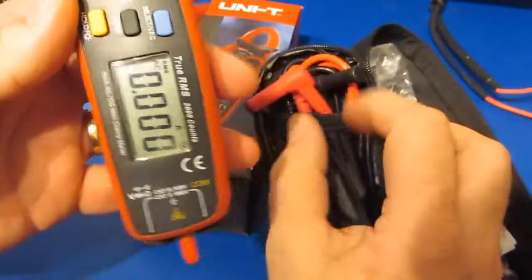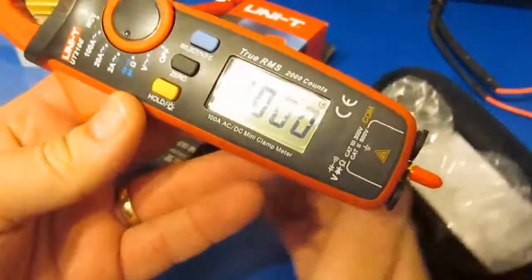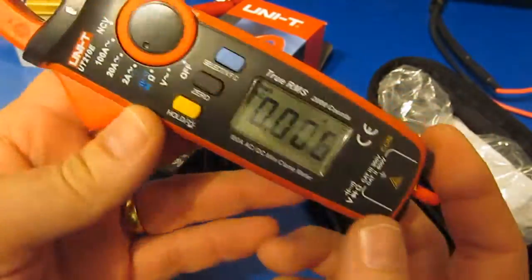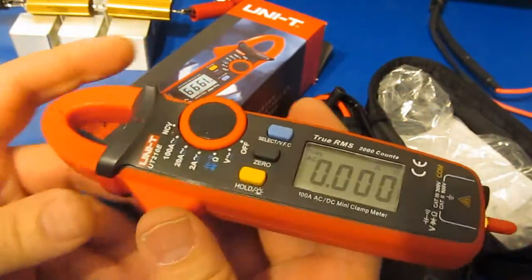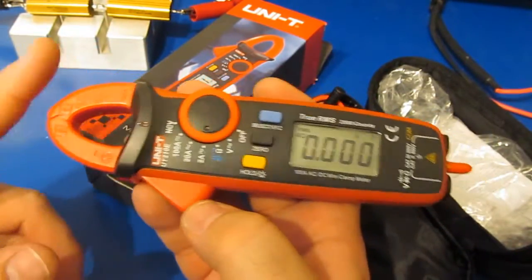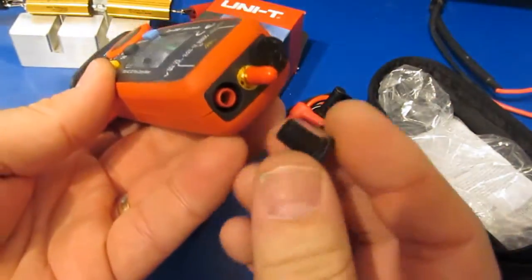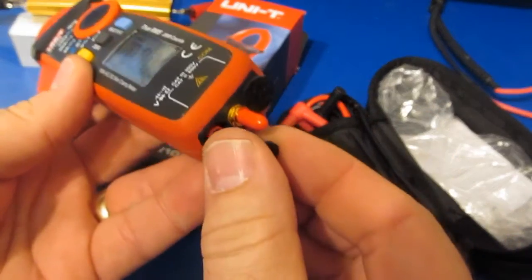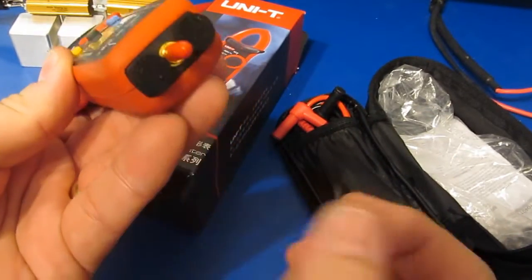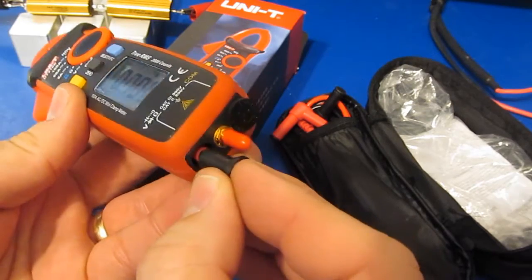The meter comes with these probes. I would never recommend using these probes at all with this meter. Again, if you're going to buy this, you're probably buying it for the current clamp alone. You can see I found these cat plugs here. These actually fit over these very nicely and these are easy enough to remove if you ever actually did need to use this.